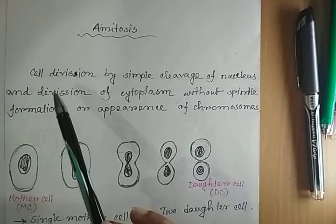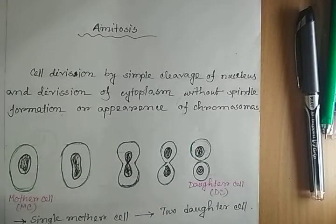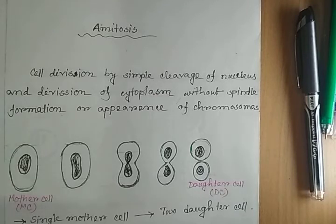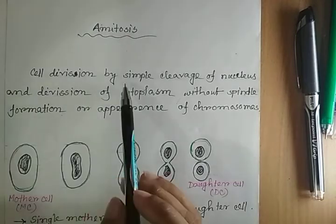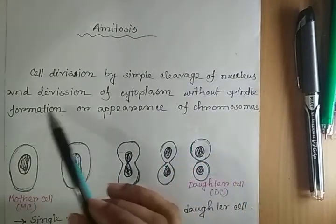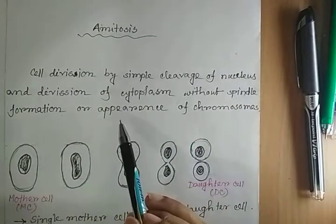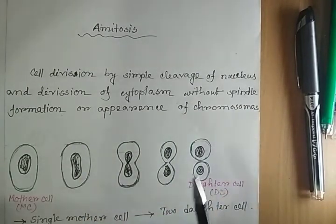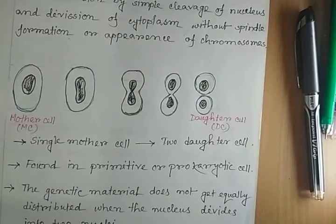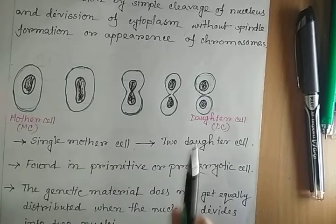Amitosis is a special type of cell division. This type of cell division takes place in lower organisms, that means primitive or prokaryotic organisms. This type of cell division is also known as karyostenosis, or direct division, or binary fission. It occurs by simple cleavage of the nucleus and division of the cytoplasm without spindle formation or appearance of chromosomes. This is known as amitosis.